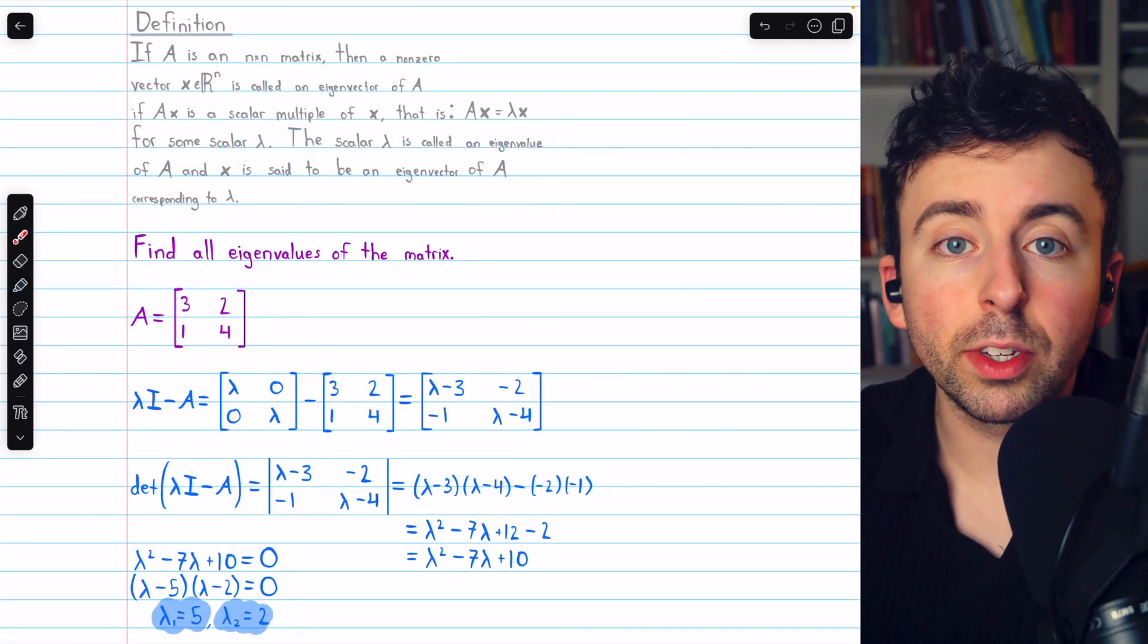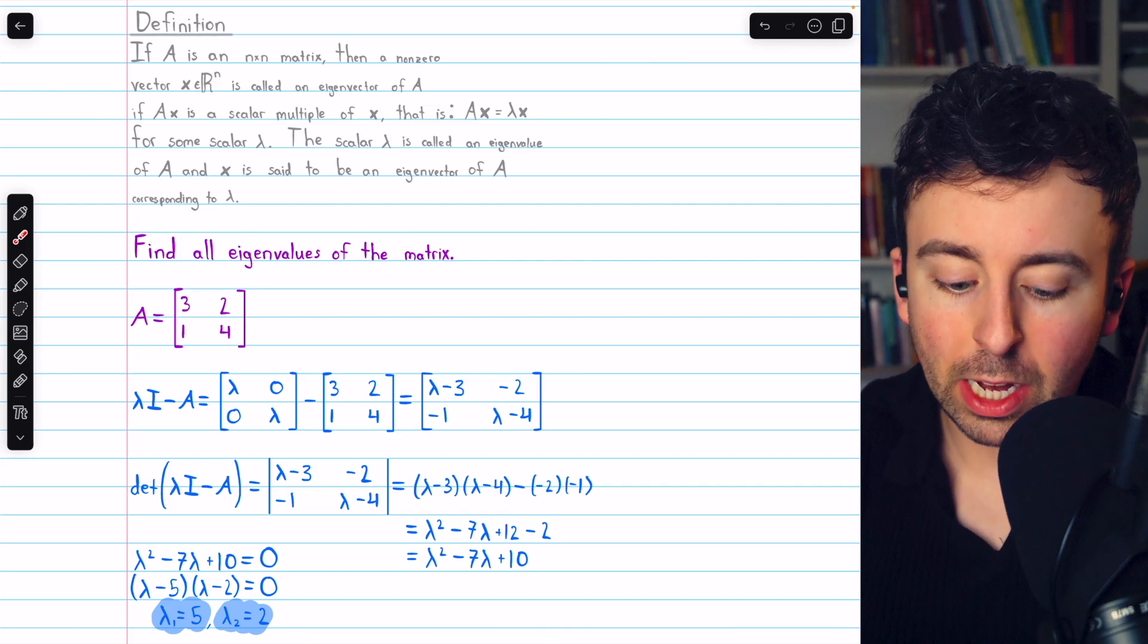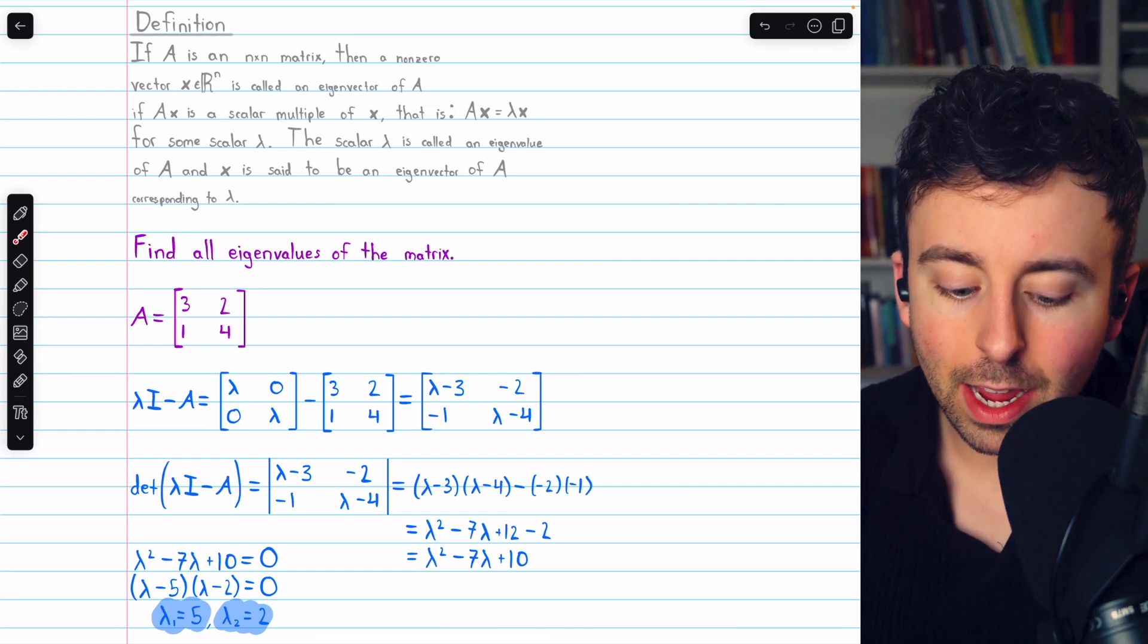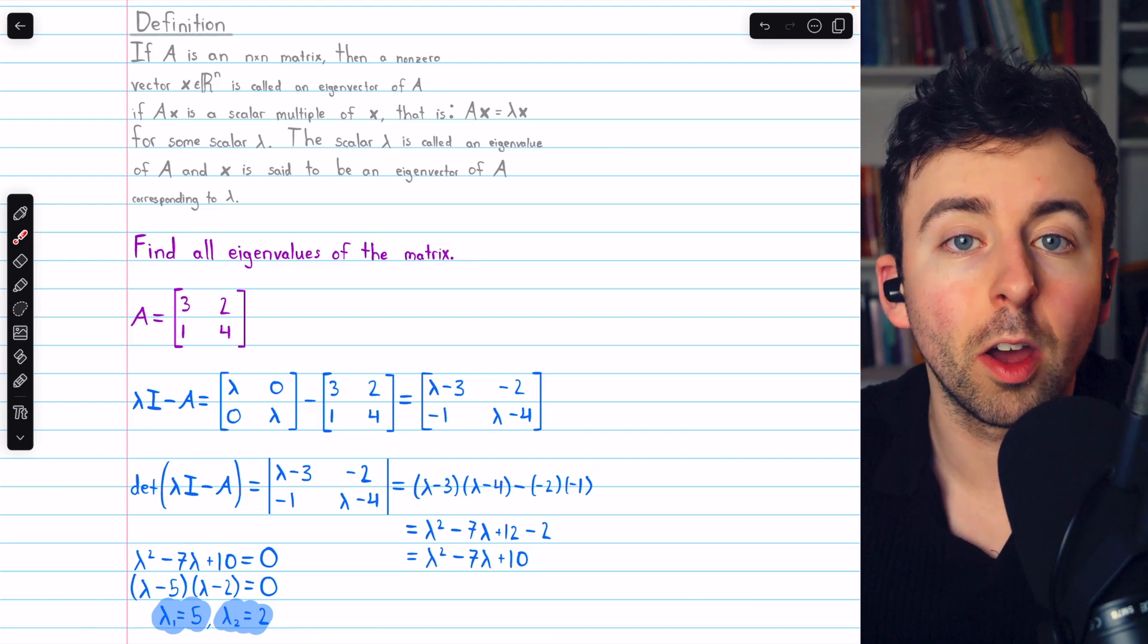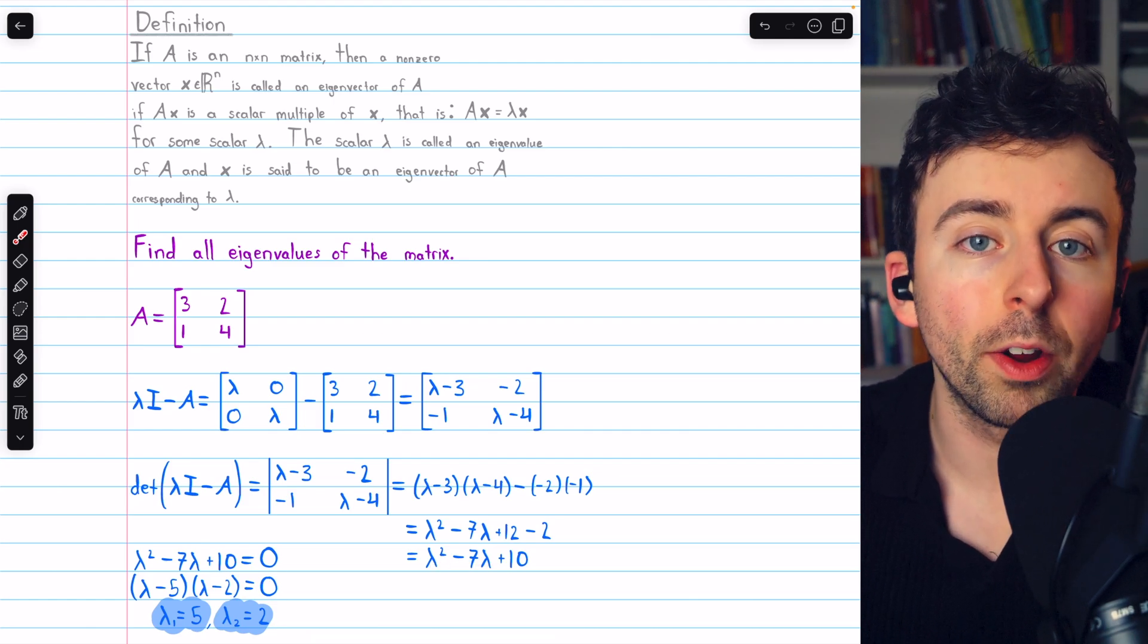And that's how to find the eigenvalues of a two-by-two matrix. Find the matrix lambda I minus A, calculate the determinant, and then set it equal to zero and solve for lambda. The solutions are the eigenvalues.